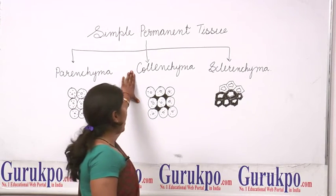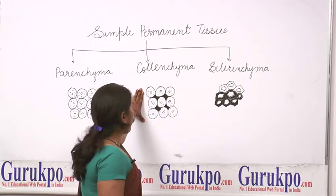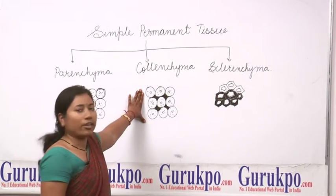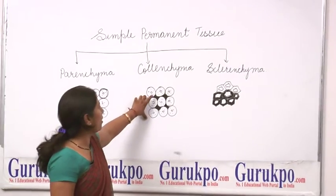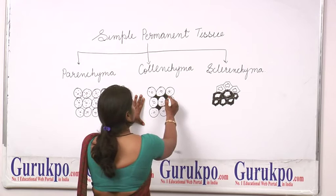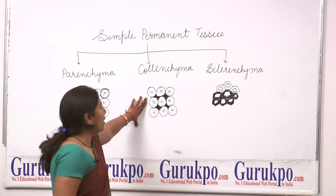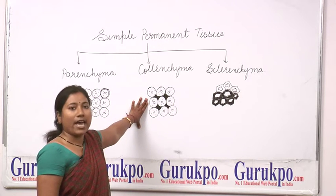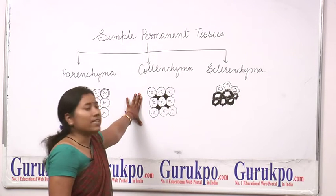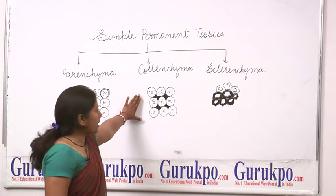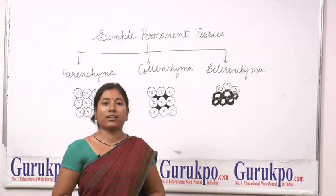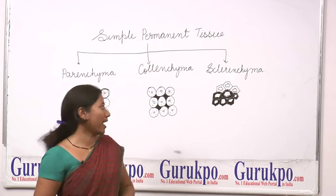Next is Collenchyma. The cells of Collenchyma are made up of isodiametric or elongated cells. They have pectocellulose deposition, or unevenly pectocellulose deposition, on the cell wall. It gives elasticity as well as mechanical strength to the plant, so it is known as living mechanical tissue. It is present in the hypodermis of the dicot stem.